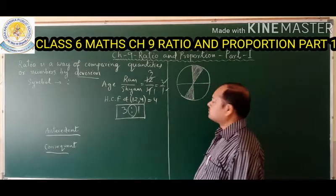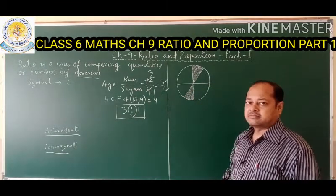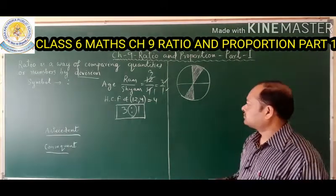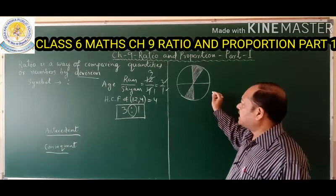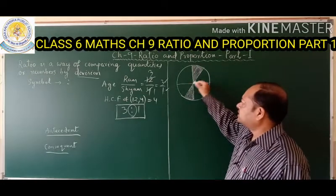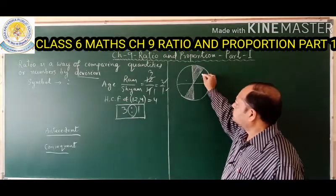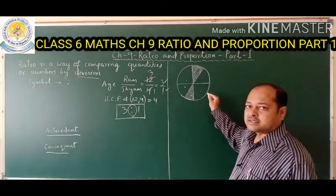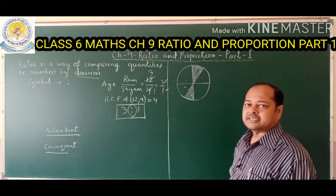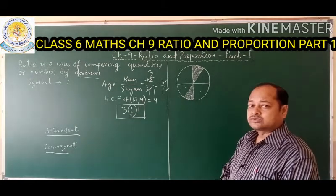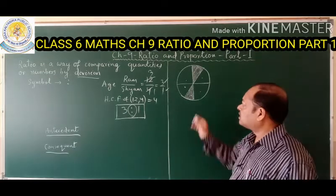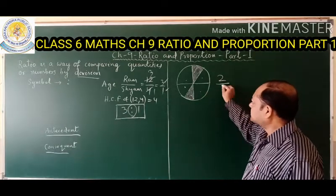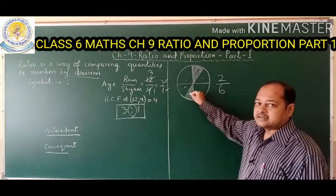Now let's observe a figure to clearly understand the concept of ratio. Look at this circle — the circle is divided into 6 parts. You can observe that 2 parts are shaded. If I ask you to find the ratio of the shaded parts, you can say 2 by 6, because 2 parts are shaded out of 6 total parts.